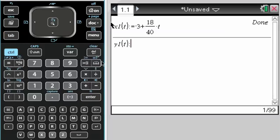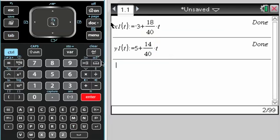Y1 of t is set equal to 5 plus 14 over 40t. And then x2 of t is set equal to, and remember colon equals is control and then the templates, so colon equals and 14 minus 20 over 30.